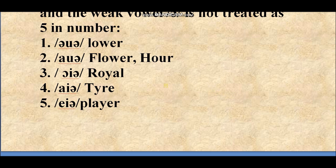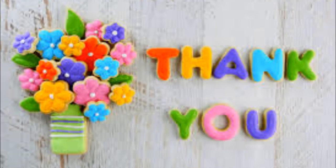There are five triphthongs. They are: /aʊə/ as in 'flower', /aʊə/ as in 'our', /ɔɪə/ as in 'royal', /aɪə/ as in 'tire', and /eɪə/ as in 'player'. Here comes the end of this video. We have completed vowels and the classification of speech sounds. If you like this video and find it helpful, please share it among your friends and subscribe — tap the bell icon for more videos. Thank you.